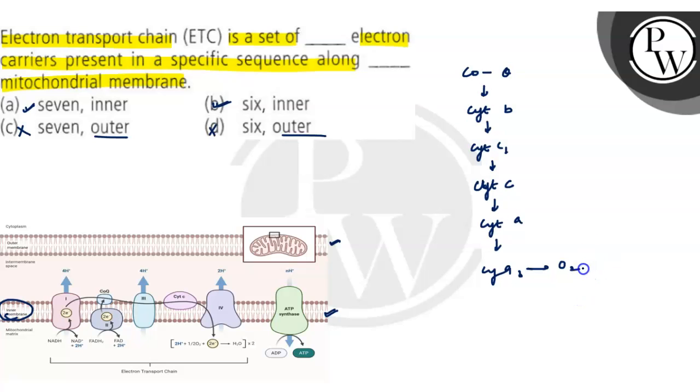Oxygen is the ultimate electron acceptor, and these electron acceptors are present in a specific sequence along the inner mitochondrial membrane. So we can say that option B is the correct option because electron transport chain is a set of seven electron carriers present in a specific sequence along inner mitochondrial membrane. Hope you understand it well.